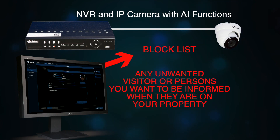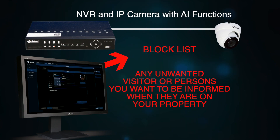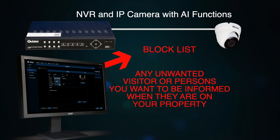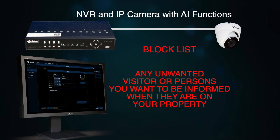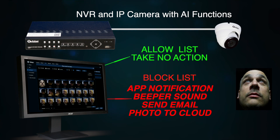The block list is where you would put anyone you definitely do not want on your property and you want to be informed if they are near your property. So it could be a troublemaker, it could be an ex, it could be the mother-in-law. Whatever you set it for, that's what it'll do — anyone you'd want to be notified about if they're on your property.